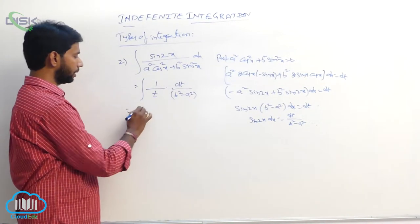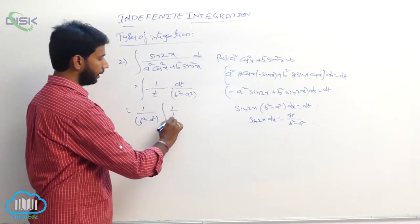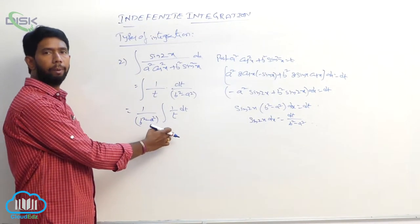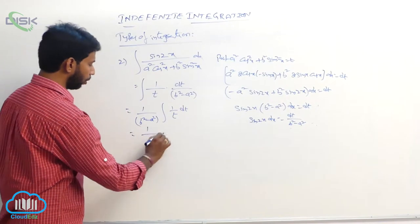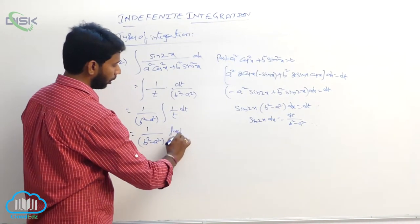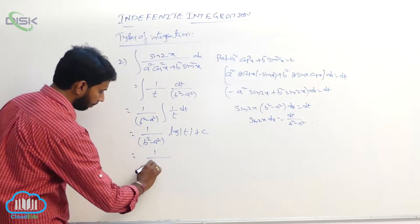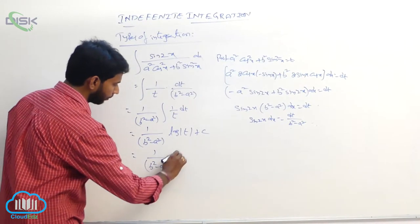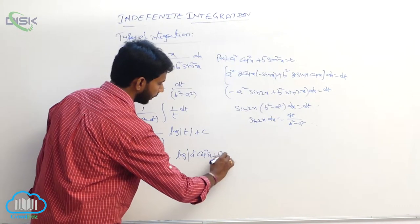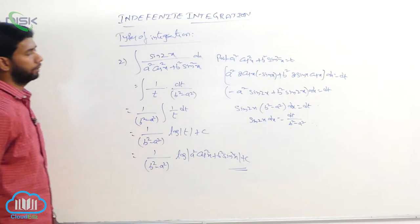Since 1/(b² - a²) is constant: (1/(b² - a²)) times integral of (1/t) dt. This is of the form integral of 1/x, which equals log|x|. The result is (1/(b² - a²)) log|t| plus constant. Substituting t back: (1/(b² - a²)) log|a²cos²x + b²sin²x| plus constant.